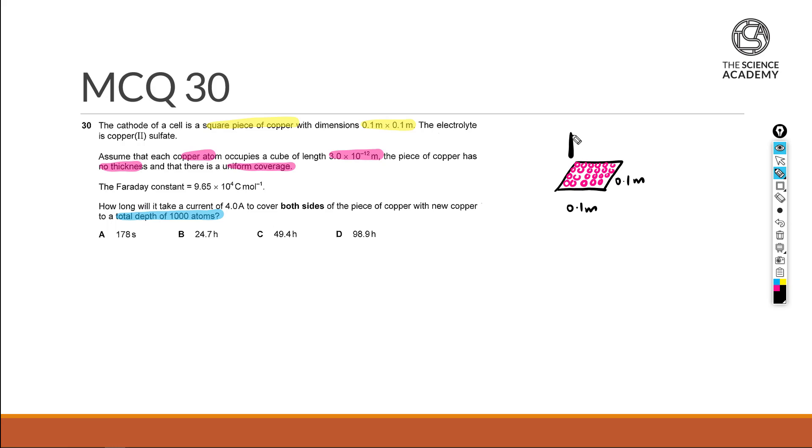Either you can have 500 on top and another 500 layers of copper at the bottom to give a total net depth of 1000 atoms.